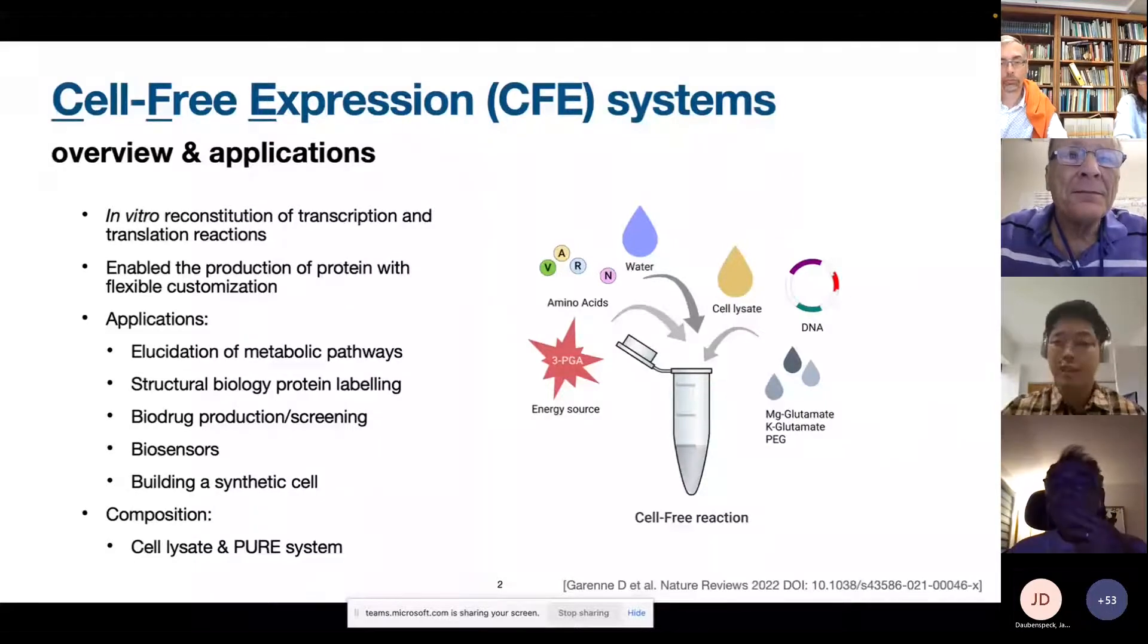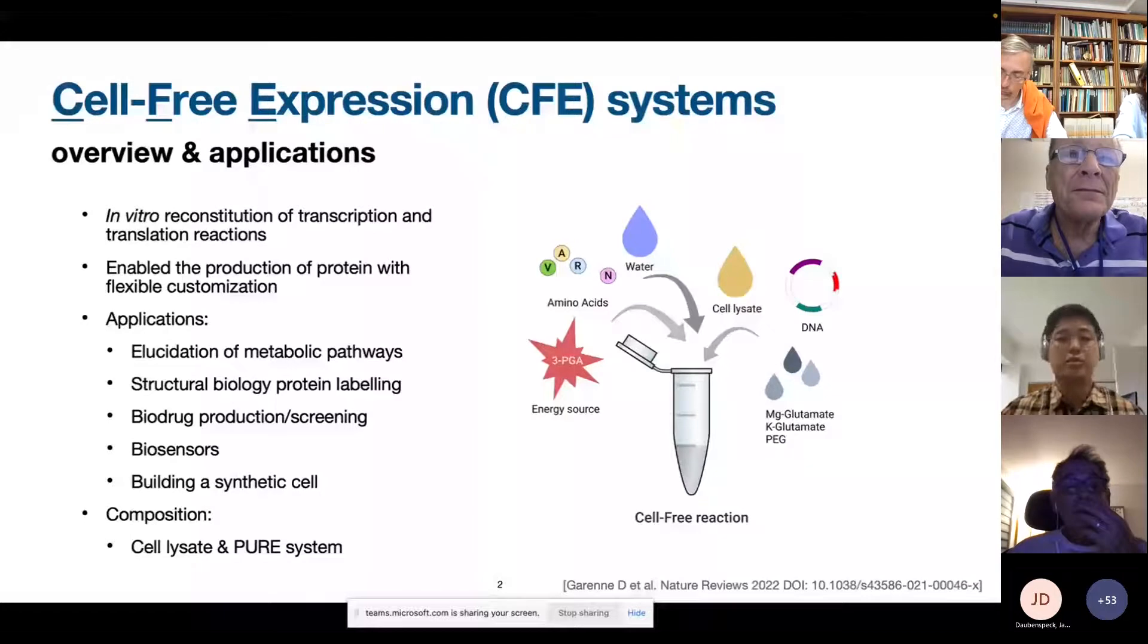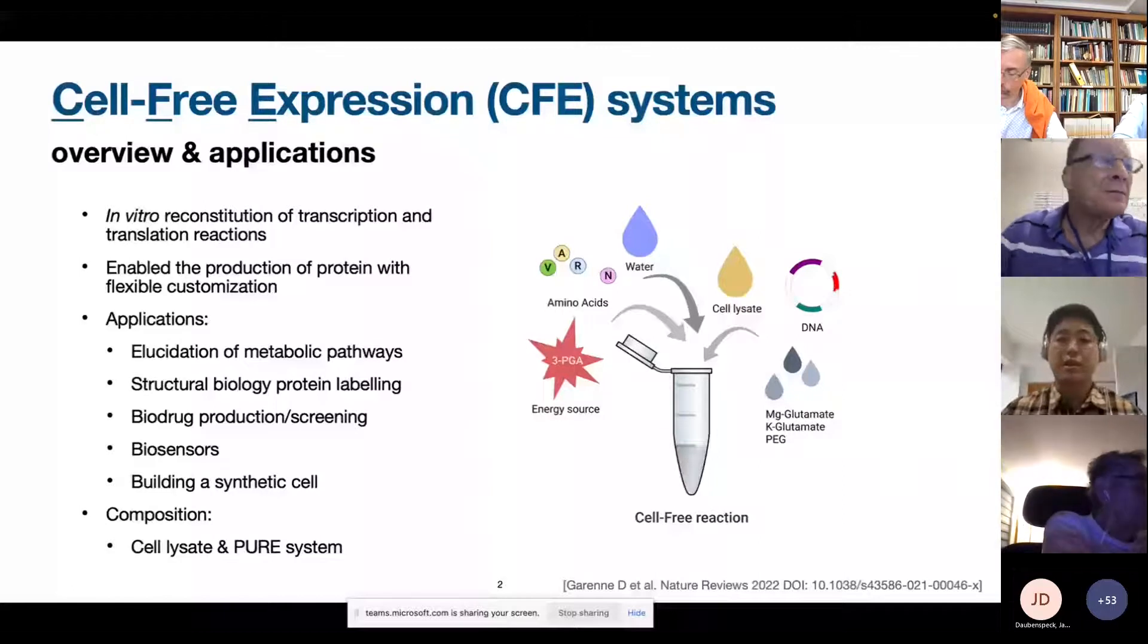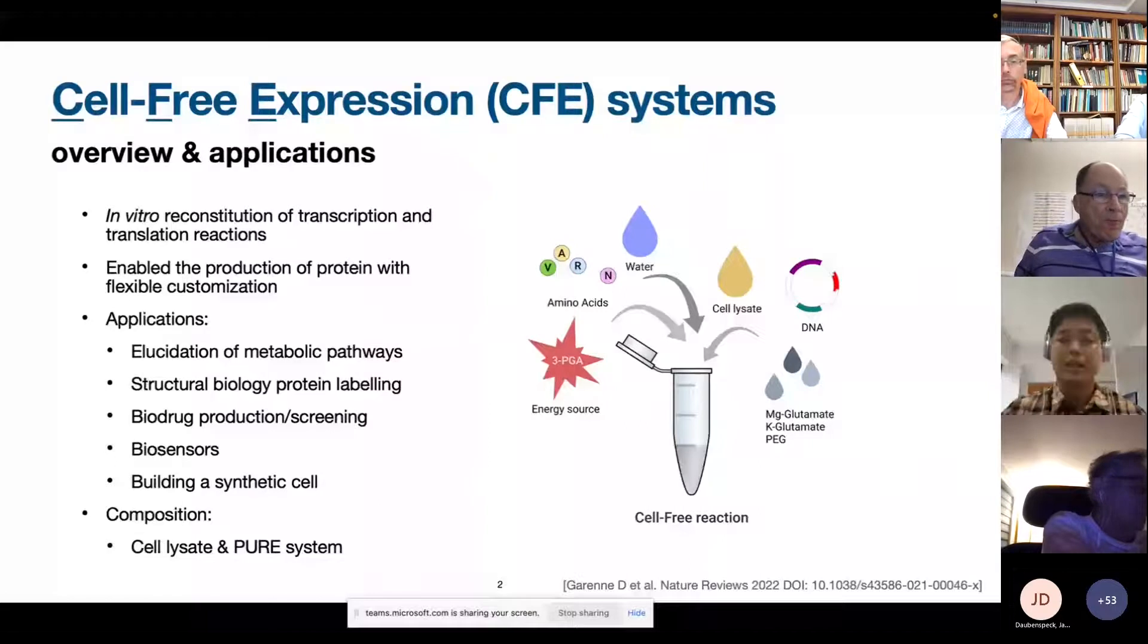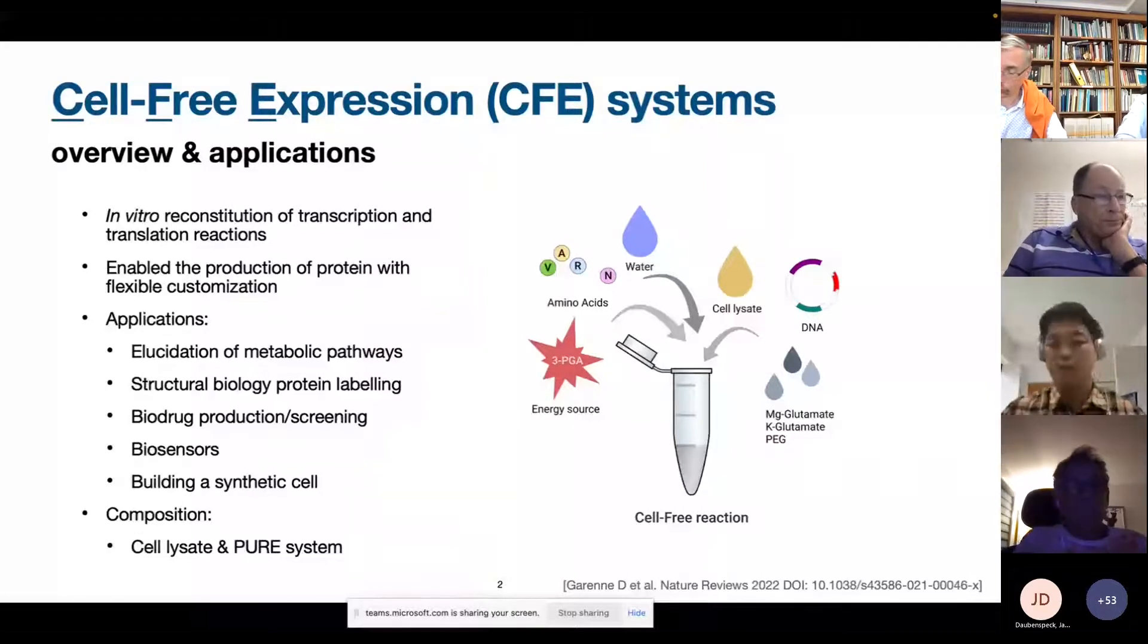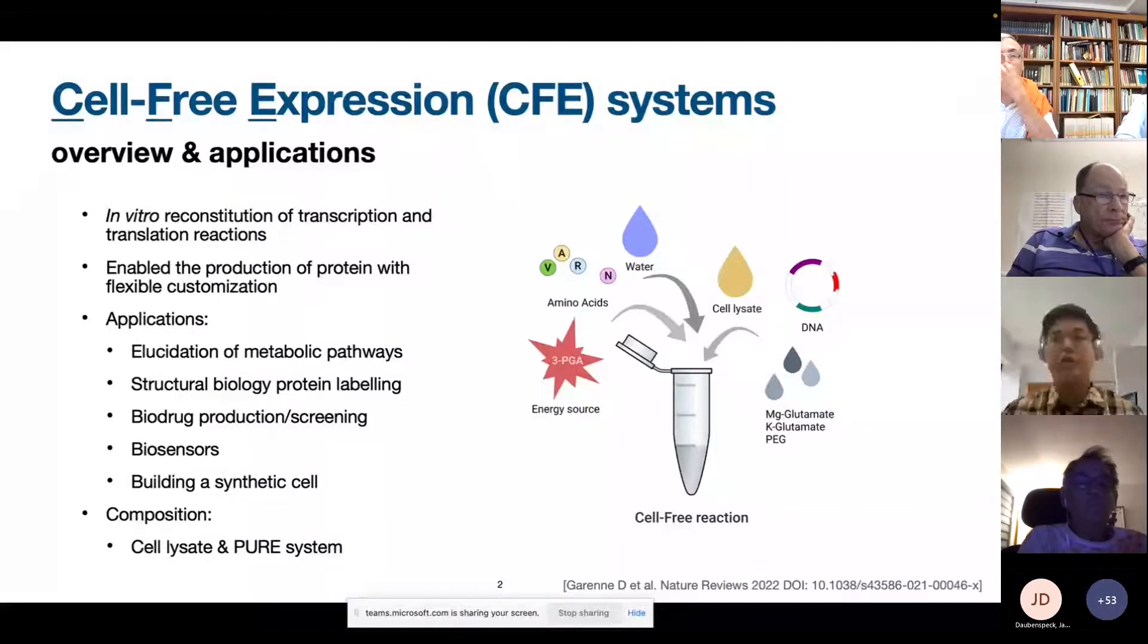The DNA template, which codes for the protein of interest, and also a source of proteins or translational factors that are necessary for transcription and translation. And in this case, it can be a cell lysate or a pure system, which is a system that comprises all the individually purified proteins necessary for transcription and translation.